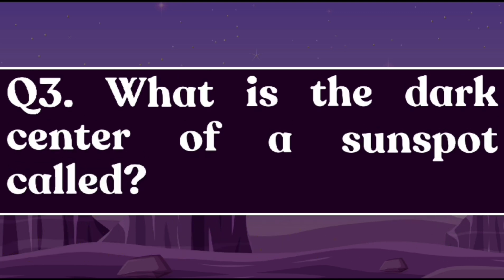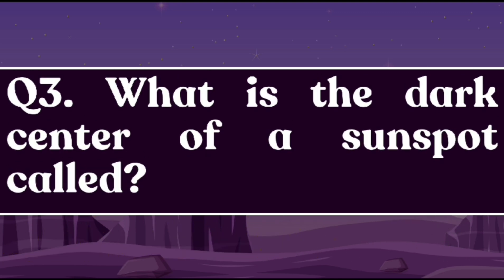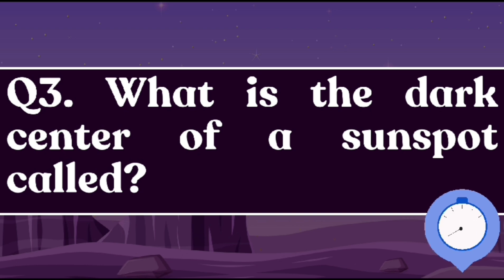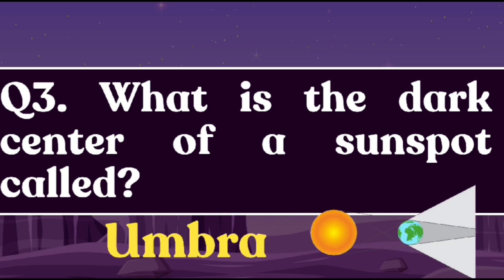What is the dark center of a sunspot called? The dark center of a sunspot is called Umbra.